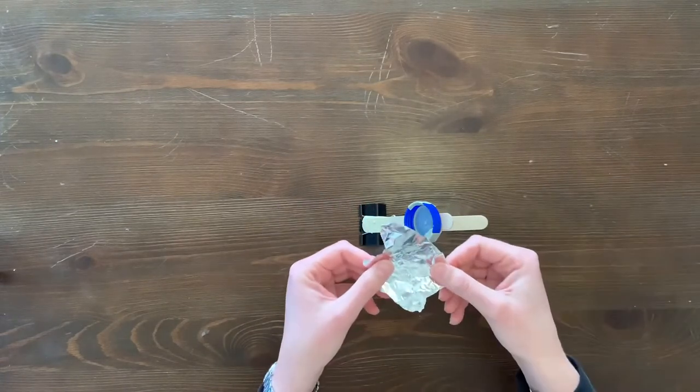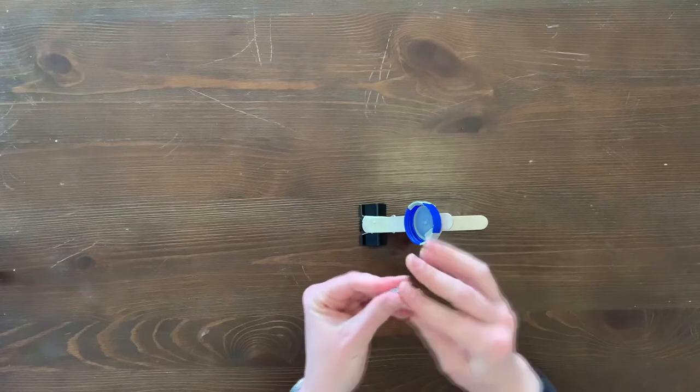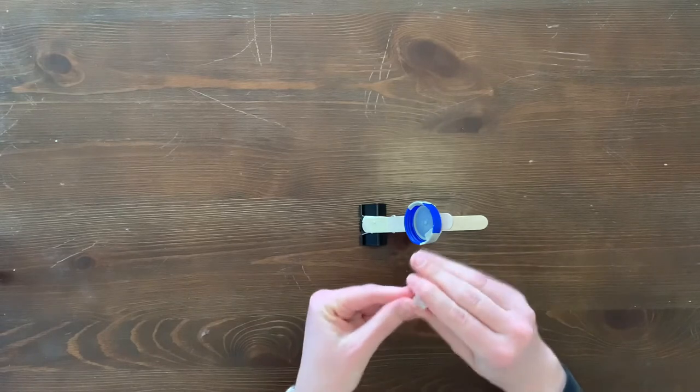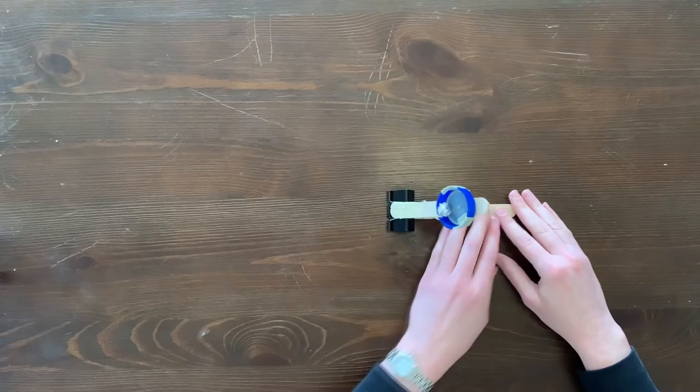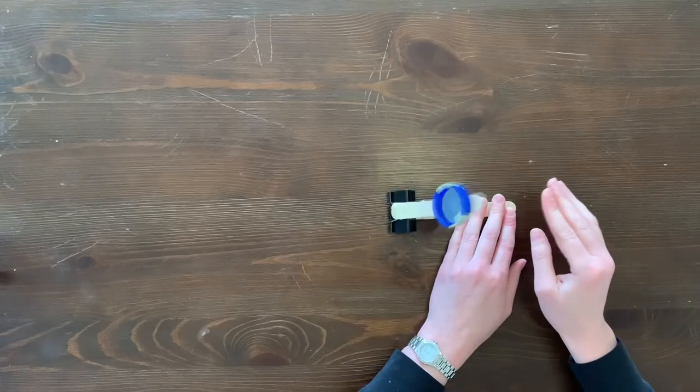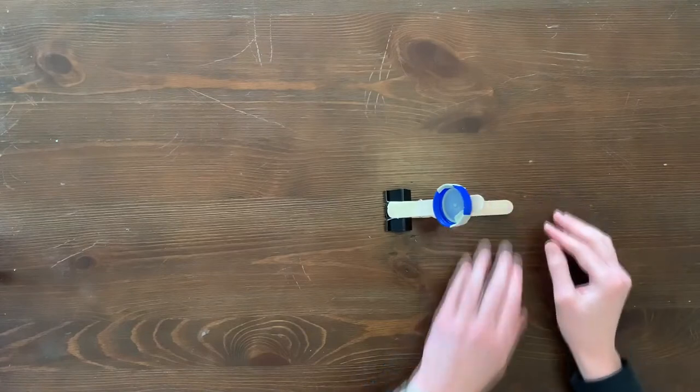The last step is to create projectiles to launch. Remember the aluminum sheet we gave you? I want you to tear it into four pieces, then roll them into little balls. Place the projectile into the bottle cap on the lever, pull it back at the top, and then release.